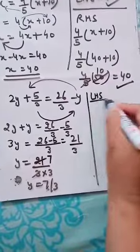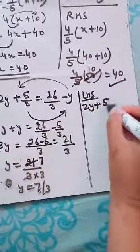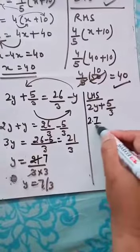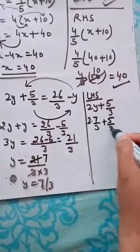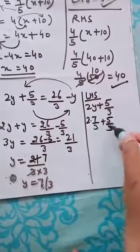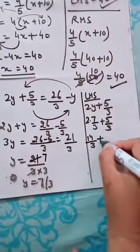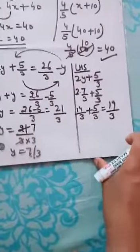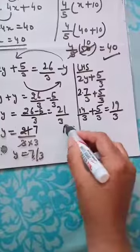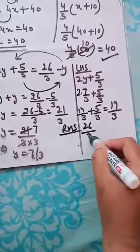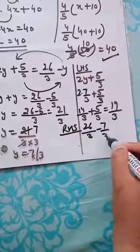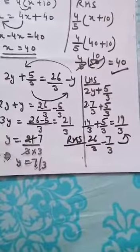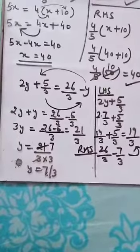Now I need to check whether my answer is correct or not. LHS is 2y plus 5 by 3. So what is y? 7 by 3. So 2 into 7 by 3 plus 5 by 3. So it is 14 by 3 plus 5 by 3. 14 by 3 plus 5 by 3, so it is 19 by 3. And you can check whether it is coming same in RHS or not. So RHS is 26 by 3 minus 7 by 3. 26 minus 7 is 19 by 3. So again my answer is matching. That shows that my calculation is correct.